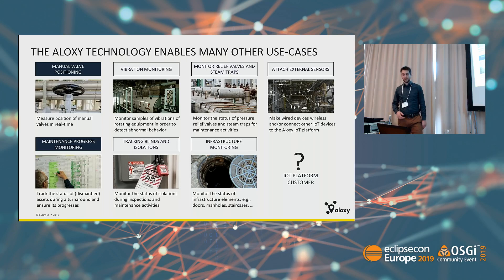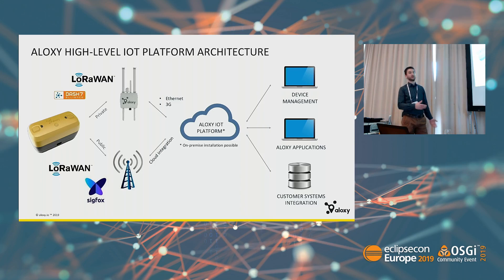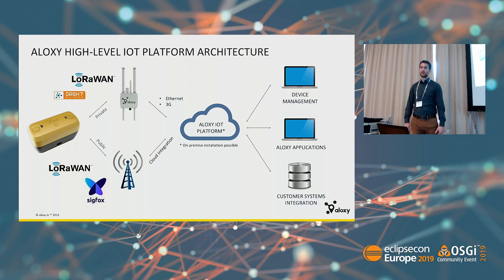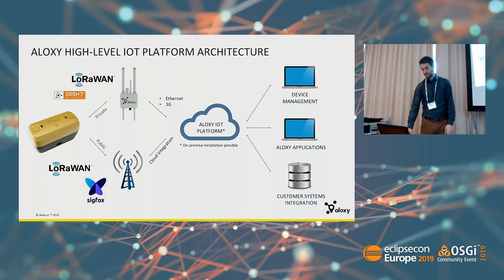Now the important part — the IoT platform itself. This is our main setup, a global overview. We have the sensor, we have private or public networks. The private network uses, for example, our own gateway using LoRaWAN or Dash 7 — Dash 7 is a technology created at the University of Antwerp and is also open source. Then we have public networks like LoRaWAN and SIGFOX using public LoRaWAN server providers. They all communicate to the Aloxy IoT platform, which then communicates to our application, the metal valve position application, device management, or other customer system integrations.